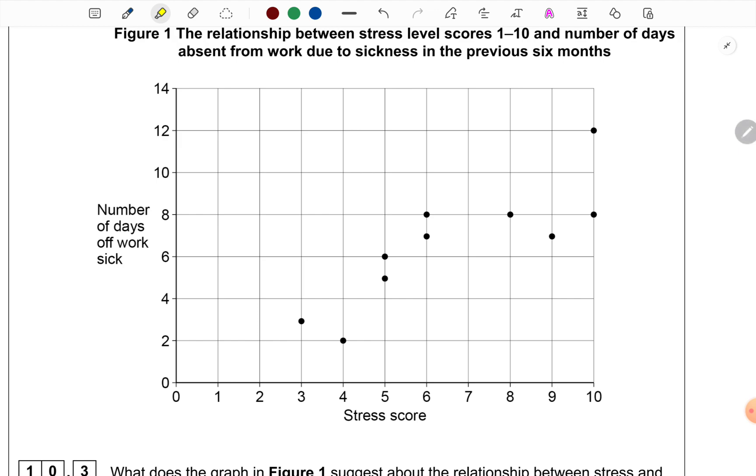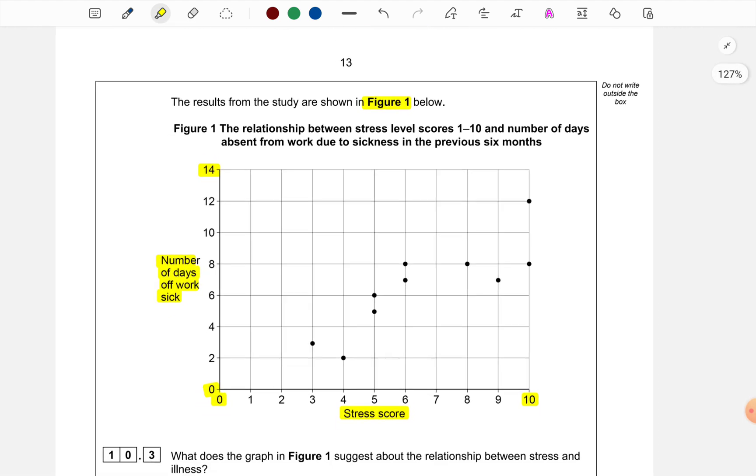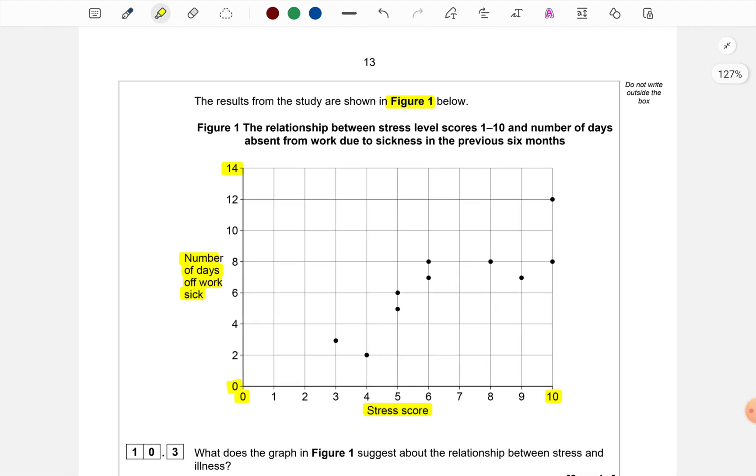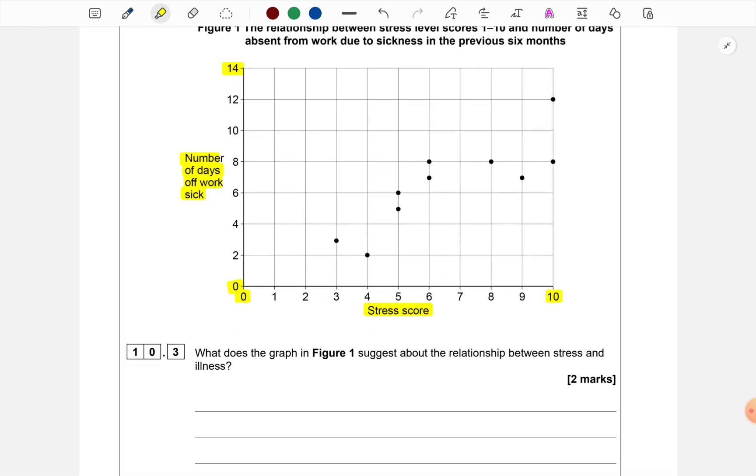On the x-axis, we have stress scores ranging from 0 to 10. On the y-axis, we have number of days of work sick that is also ranging starting from 0 but it goes up to 14. And we see a typical scatter plot or a dot plot in front of us.